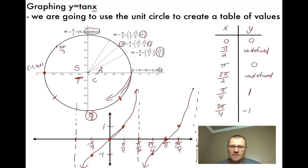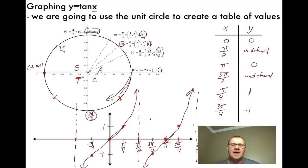So there's our tan graph — it looks kind of funky, but that is the shape of a tan graph. Just like a sine and cosine graph, it does repeat itself. The shape repeats itself over and over again.